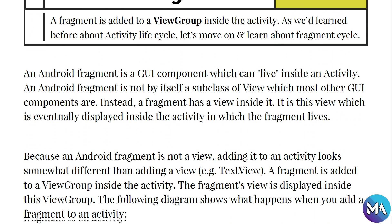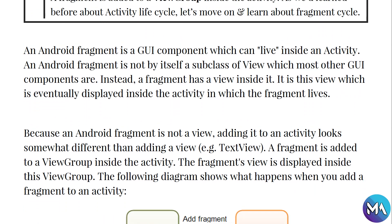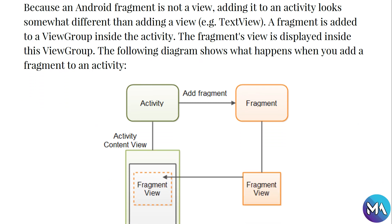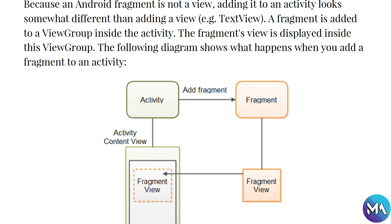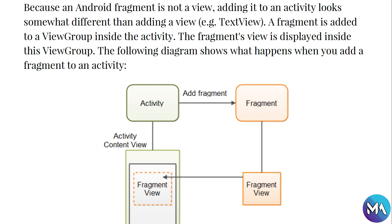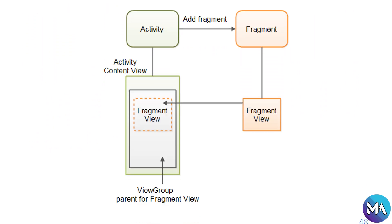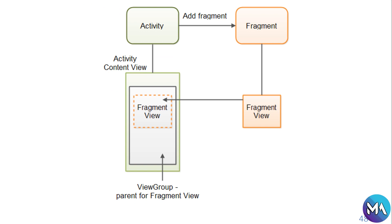Instead, a fragment has a view inside it — it is this view which is eventually displayed inside the activity in which the fragment lives. Because an Android fragment is not a view, adding it to an activity looks somewhat different from adding a TextView. A fragment is added to a view group inside the activity, and the fragment view is displayed inside that view group.